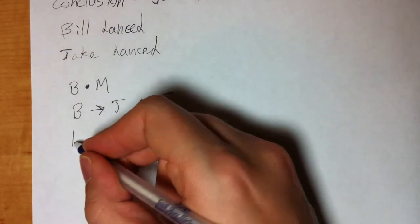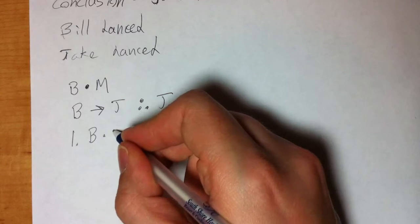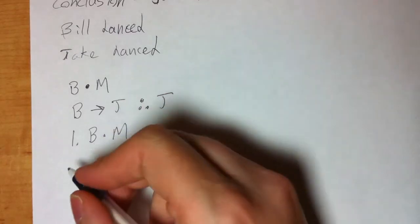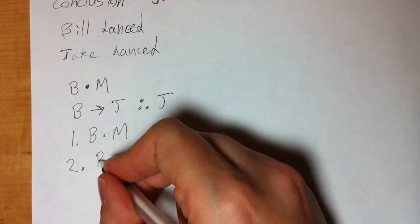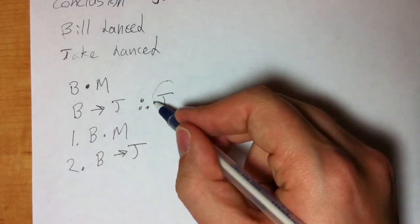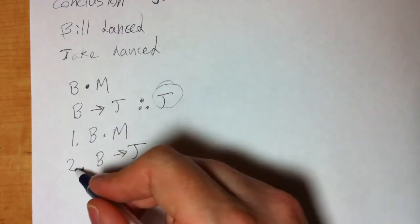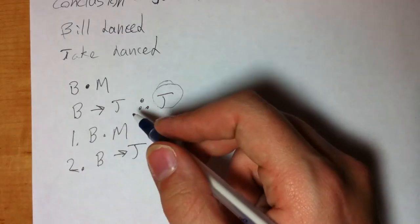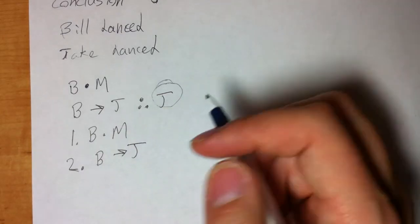A proof would essentially be to set it up like this: B dot M on line one, line two would just be our second premise, and our goal would be to get the conclusion. Now what can I do to manipulate these two lines to get the conclusion?